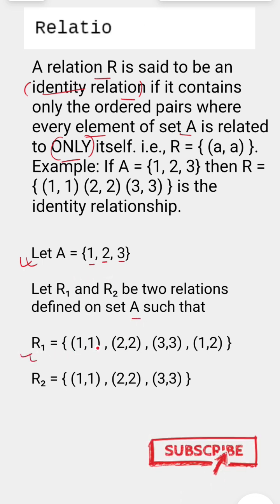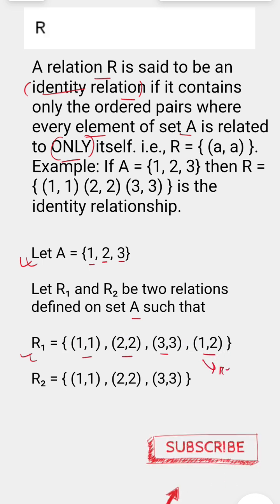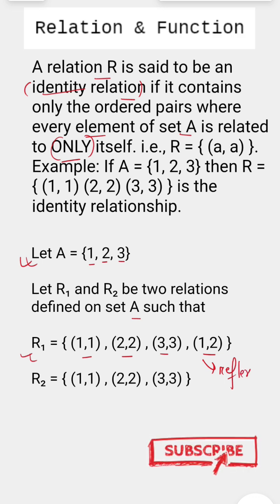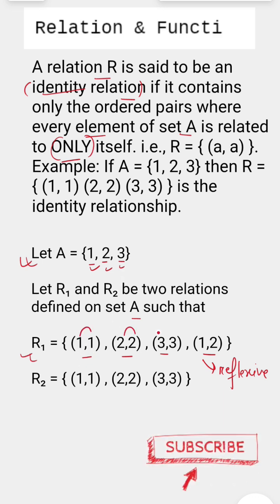In this case, the first relation will be called a reflexive relation. Why reflexive relation? Because it satisfies the condition that for all elements of the particular set, we have ordered pairs with similar elements, and it can also include an ordered pair with different elements.